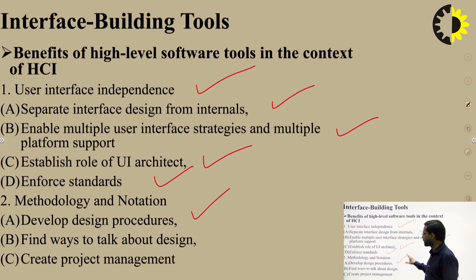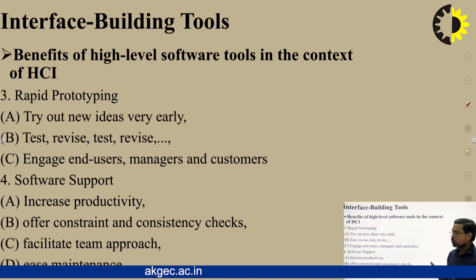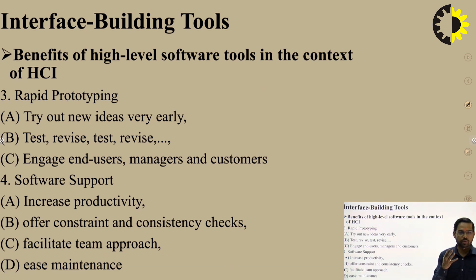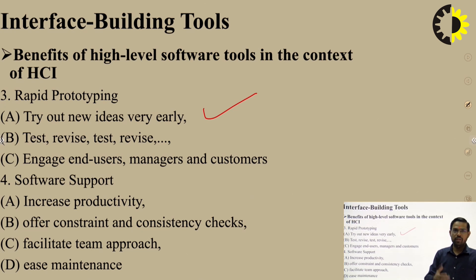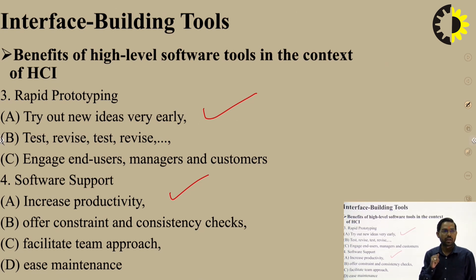The methodology and notation used includes: developing a design procedure — first, design; second, find ways to talk about the design; third, create project management. The steps are: requirements, design, and rapid prototyping. Rapid prototyping means creating a prototype of your product early, then test-revise cycles with end users, managers, and customers. Software support increases productivity, offers constraint and consistency checks, facilitates a team approach, and enables easy maintenance.